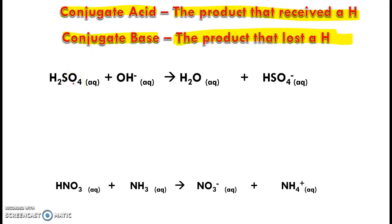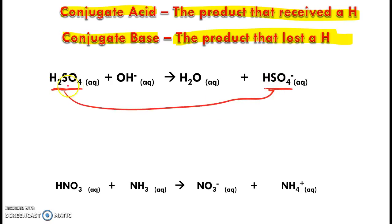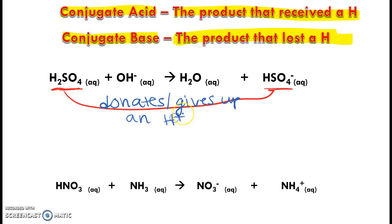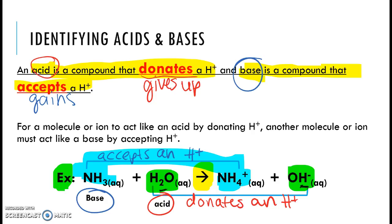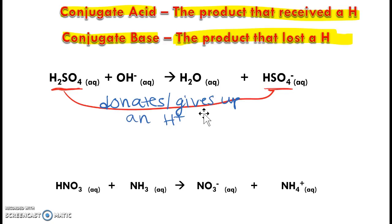In this reaction, we're given H2SO4, and we're going to connect the thing on the other side of the reaction that looks the most similar — the product that has either gained or lost an H. We go from H2SO4 to HSO4-. What's happening is H2SO4 donates or gives up an H+. Using our definition, the acid is the substance that donates or gives up an H+. Therefore, H2SO4 is our acid.